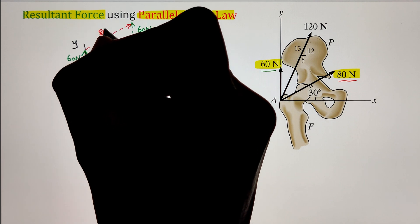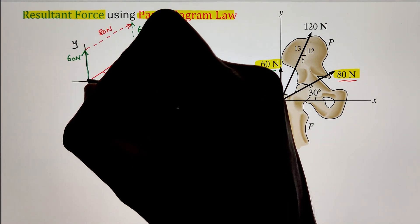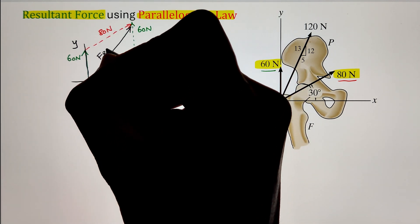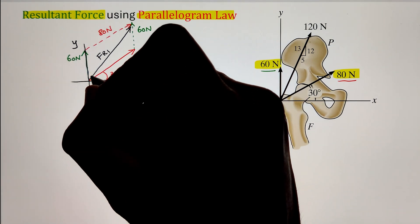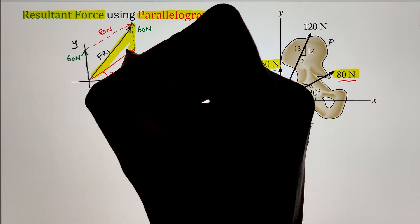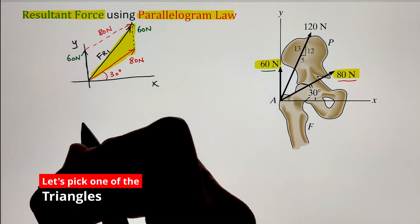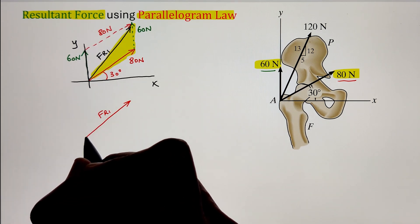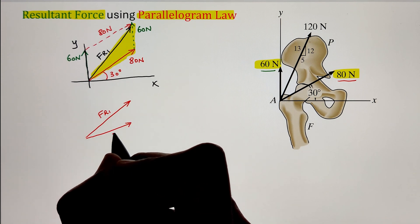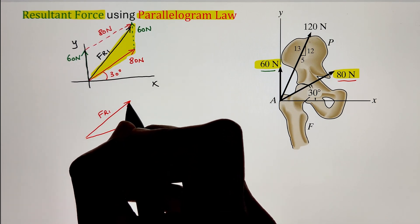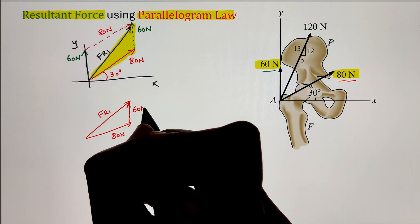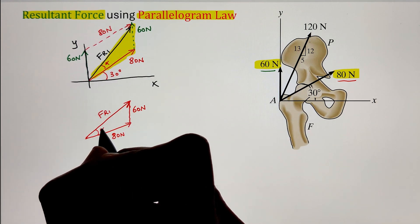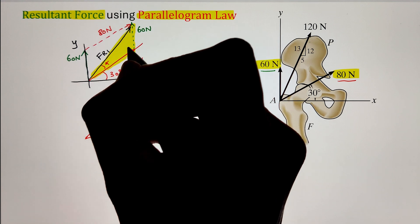Once that is done, the diagonal of this parallelogram will give us our resultant force. Let us label that as Fr1. With the diagonal, our parallelogram is divided into two triangles. We can pick any one of those triangles and solve for the internal angle to utilize our cosine and sine law to solve for the resultant force Fr1. Let us separate the bottom triangle and draw it separately. We have Fr1 as the resultant of the 80 Newton force making 30 degrees from the horizontal x-axis and the 60 Newton force acting in the vertical direction. Let us label the internal angle between Fr1 and 80 Newton as alpha.